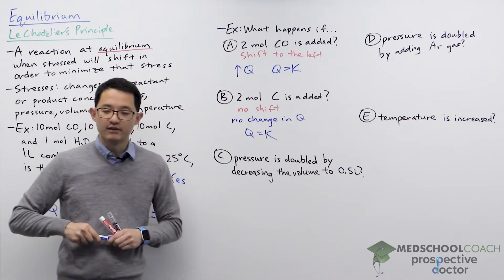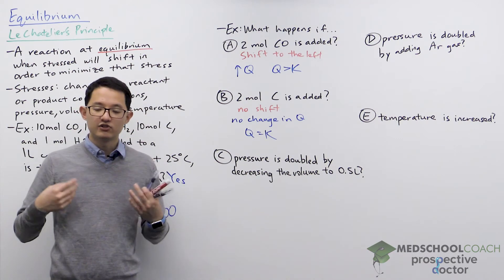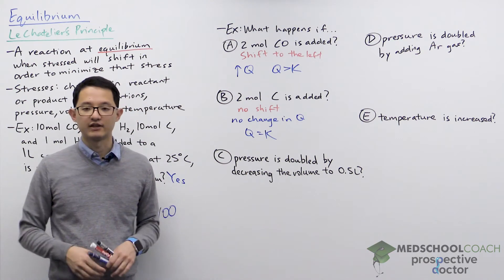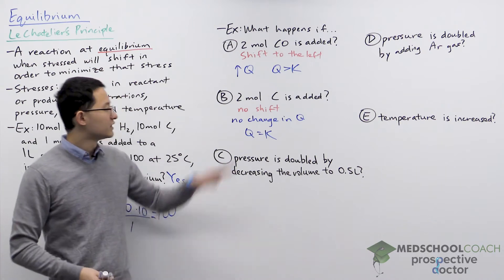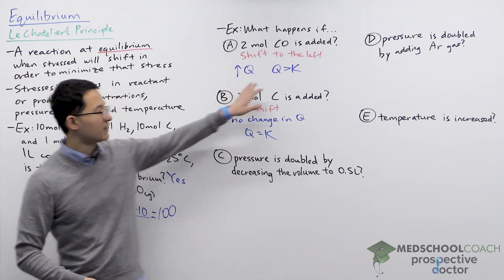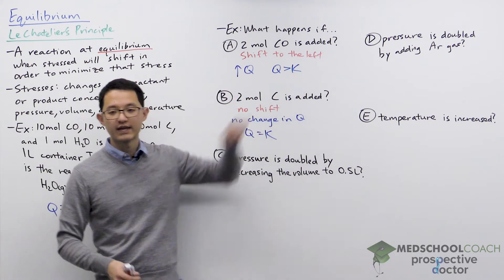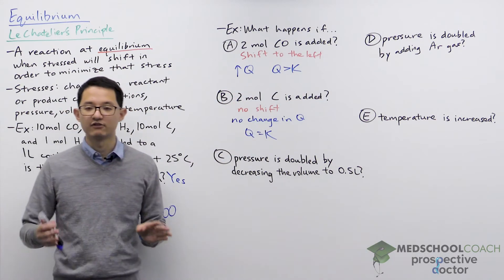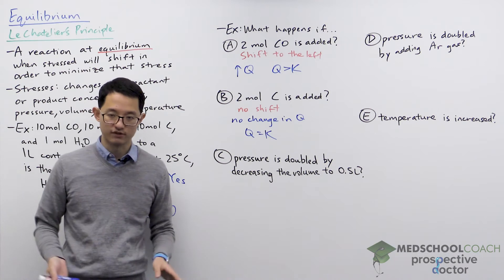The main idea here is: if you want to induce a shift by Le Chatelier's principle, Q cannot be equal to K. If Q equals K, you're at equilibrium and there is no shift.